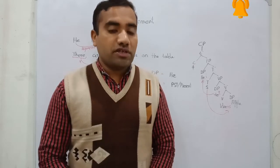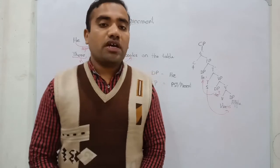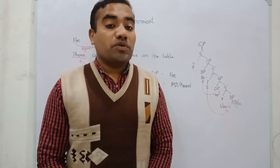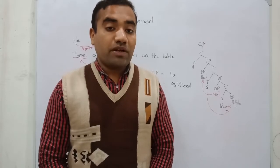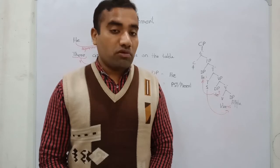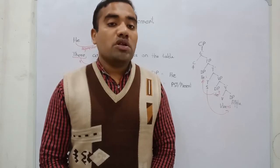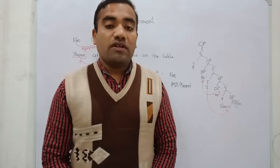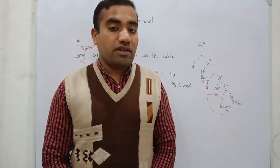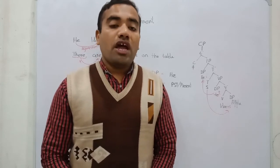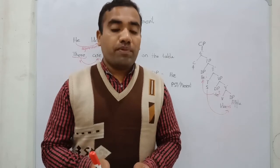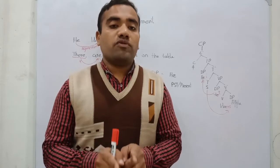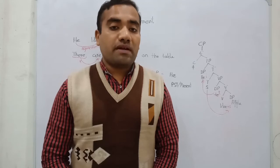In the English data, Chomsky has claimed that the finite T has two features: the EPP feature and the Case feature. This is the crucial property of the TP, that is the finite TP. If we have a non-finite TP, it does not have these two properties. But if we have the finite T, it has the EPP feature and the Case feature, and on this basis we can say that agreement can be made. T performs a very crucial role when we make the agreement.